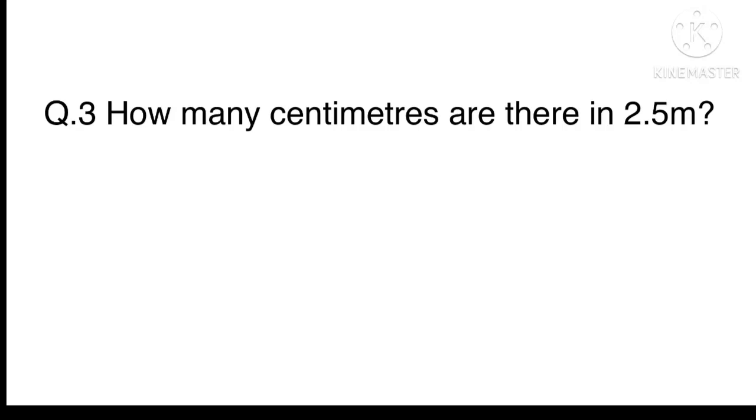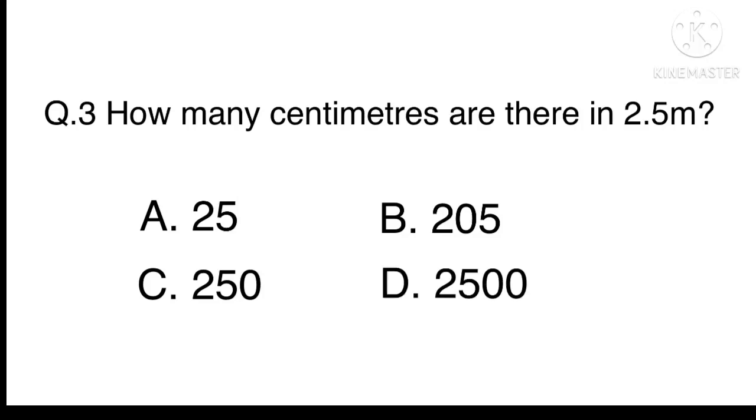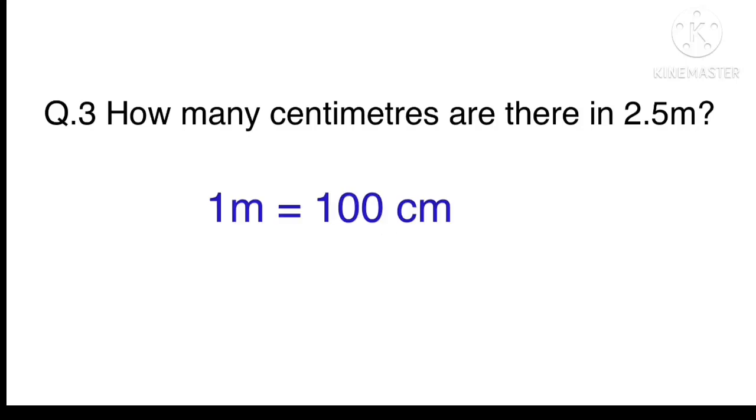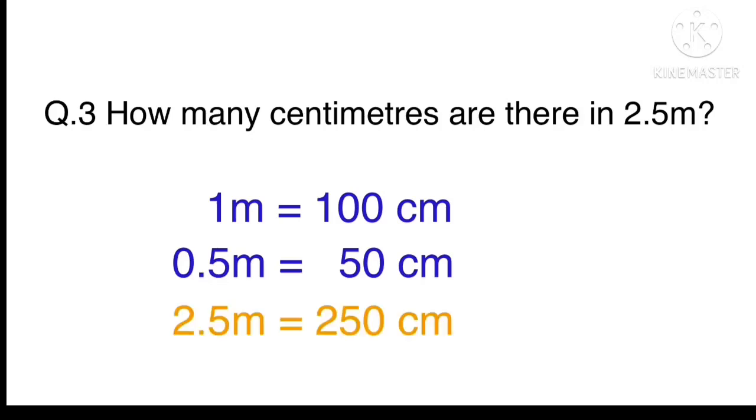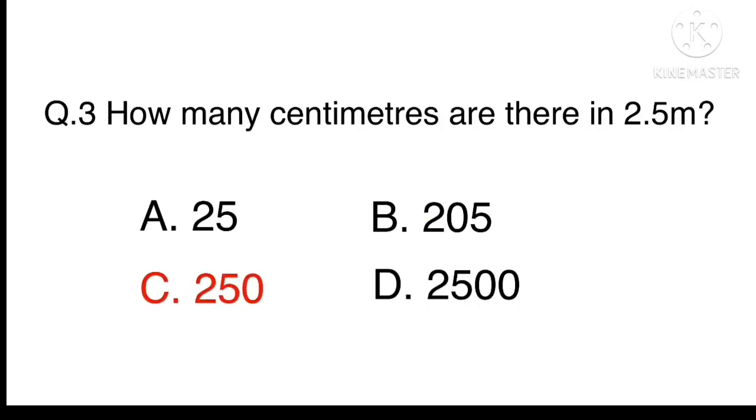Question 3. How many centimetres are there in 2.5 metres? A. 25 B. 205 C. 250 Or D. 2,500. In 1 metre, there are 100 centimetres and in 0.5 metres, there are 50 centimetres. So, there are 250 centimetres in 2.5 metres. The answer is C. 250